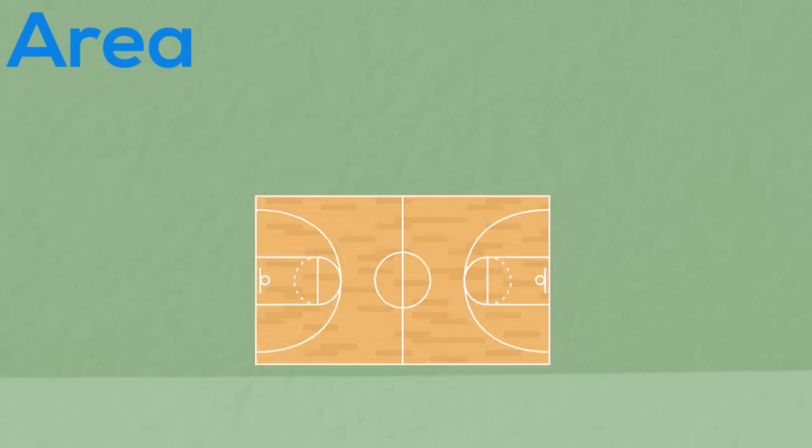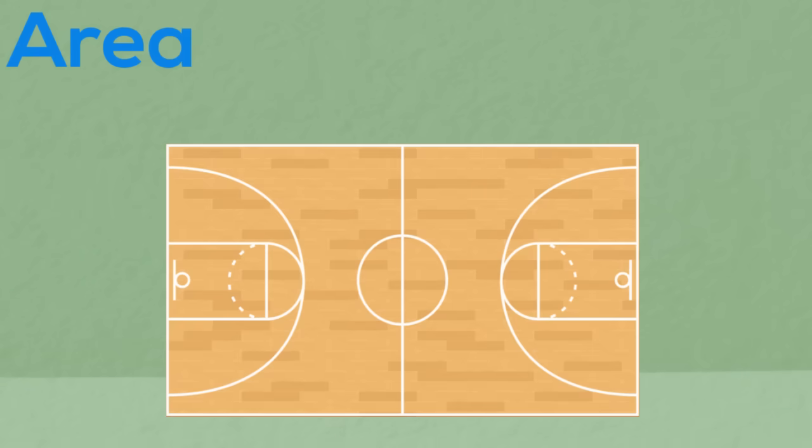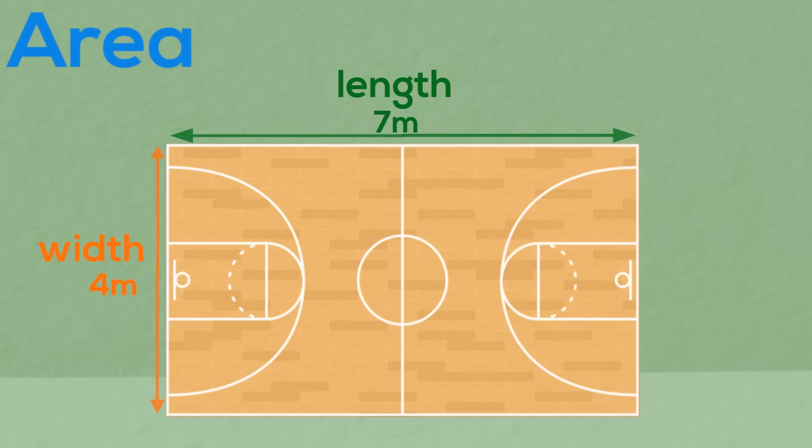But what if we want to calculate the area of a shape and there are no squares to help us? For example this playing court. We will need to know the length and the width of our shape. The length is 7 metres and the width is 4 metres.